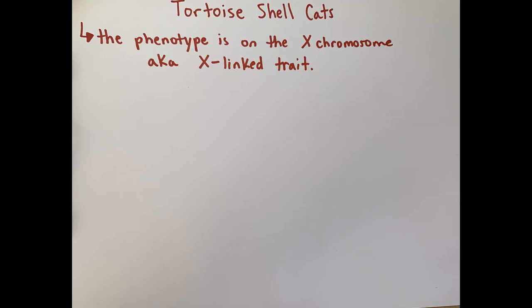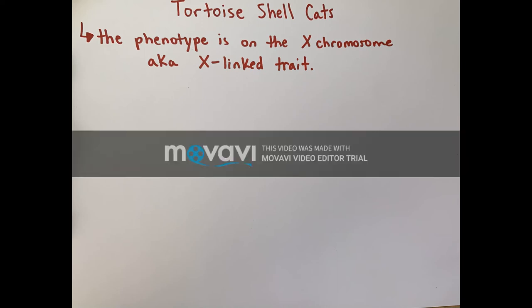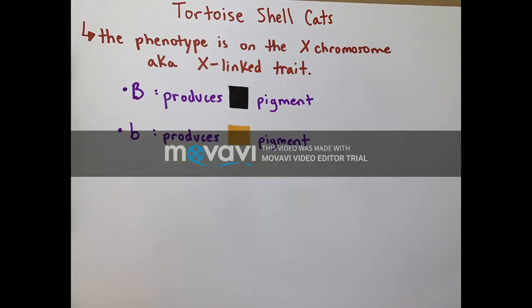To better understand the relationship between X-inactivation and X-linked inheritance, let's demonstrate the phenotypes of tortoiseshell cats. The phenotype of color of coat is on the X chromosome, also known as an X-linked trait. Two traits are available for offspring: black and yellowish-orange.